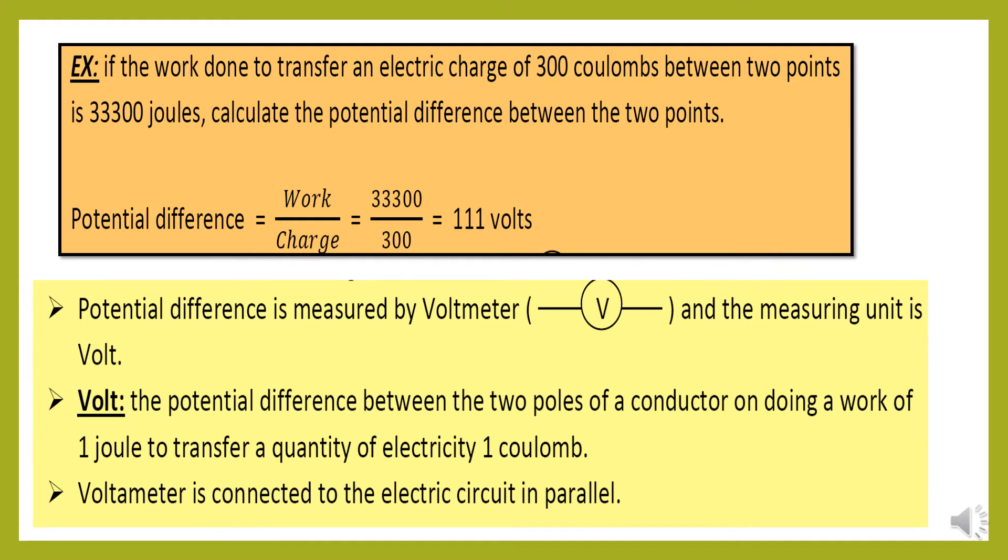Let's take this example. If the work done to transfer an electric charge of 300 coulomb between two points is 33,300 joule, calculate the potential difference between the two points.